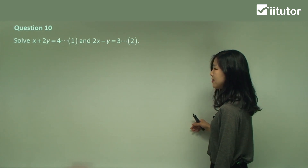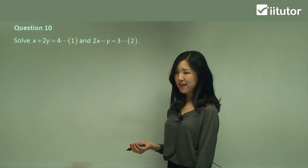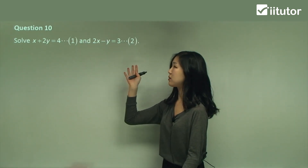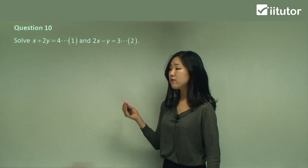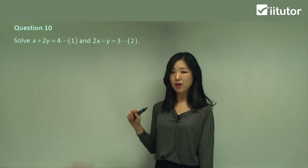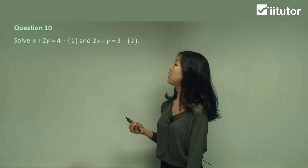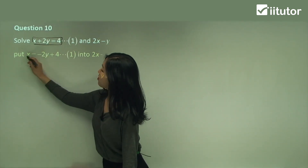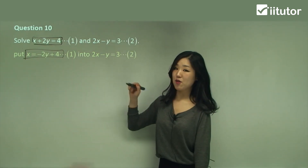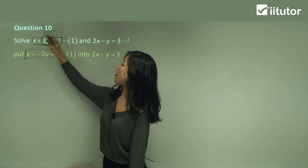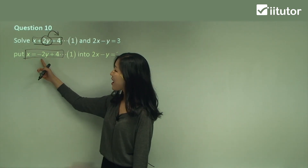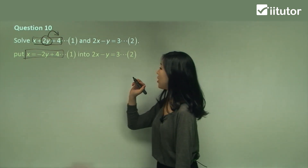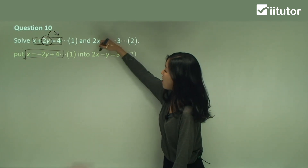Question 10. This time neither equation has a subject — equation one is x plus 2y equals 4, and equation two is 2x minus y equals 3. So what I'm going to do is manipulate one of these to make either x or y the subject. I moved the 2y over to the right-hand side, making it negative 2y plus 4, so x is the subject. Now I'm going to sub that into the second equation in the position of x.